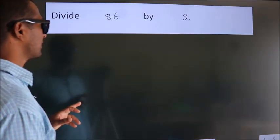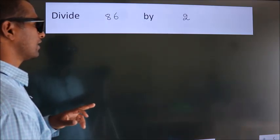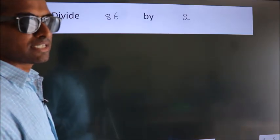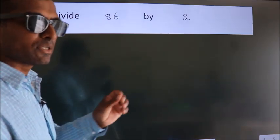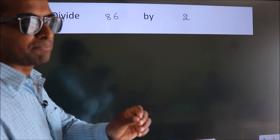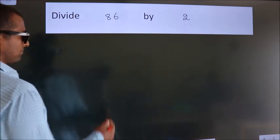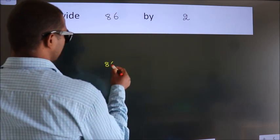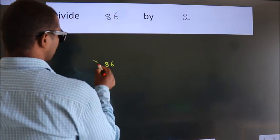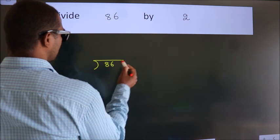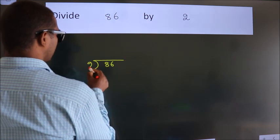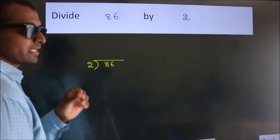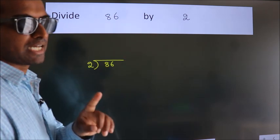Divide 86 by 2. To do this division, we should frame it in this way: 86 here, 2 here. This is your step 1.